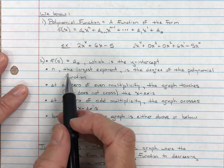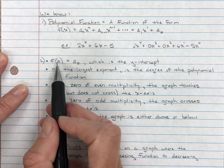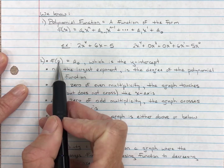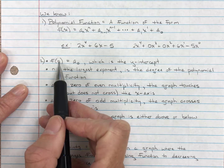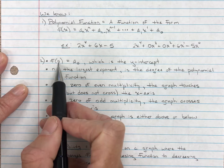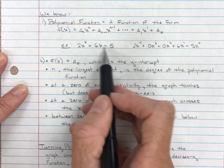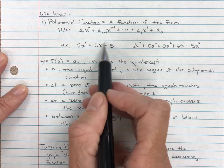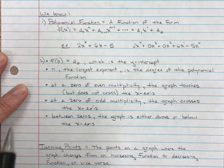The second thing we know is a number of things from the previous video lecture. When x is 0, you have the y-intercept — we've seen that often with linear and quadratic functions. The y-intercept is a₀, the value of the constant. When x is 0, you're left with the constant, so in this example it crosses the y-axis at negative 5.